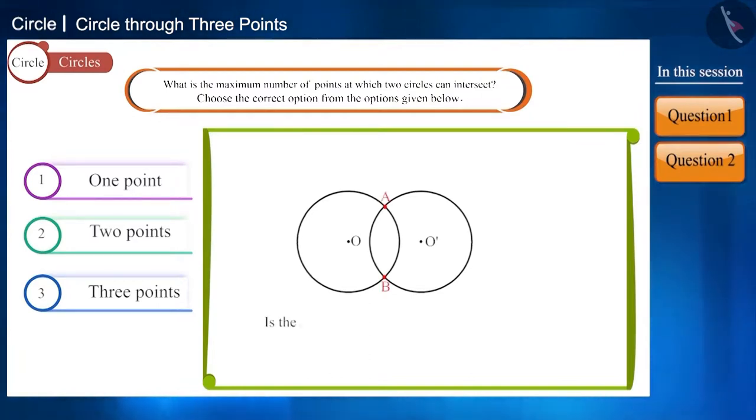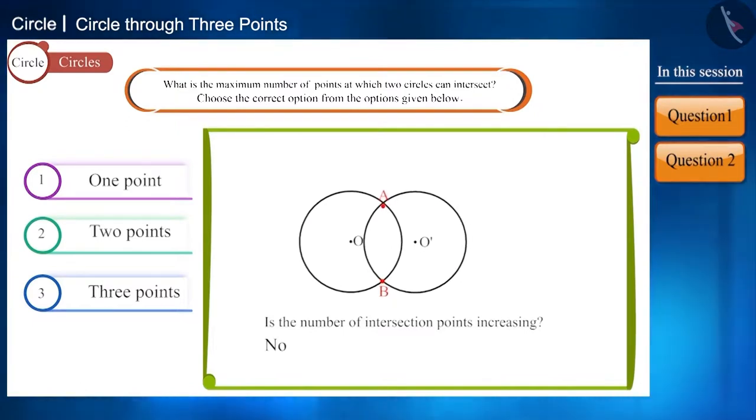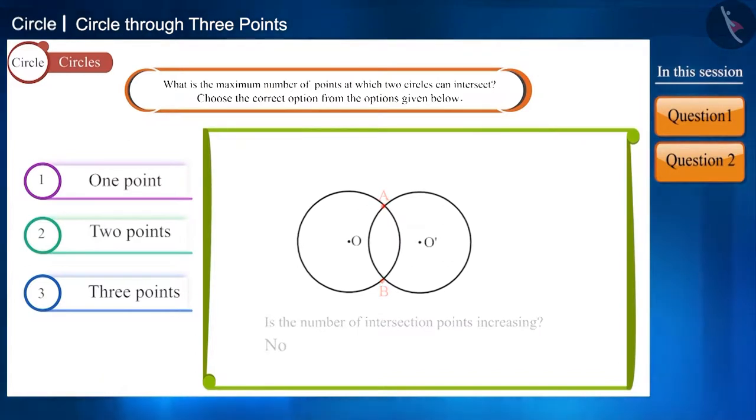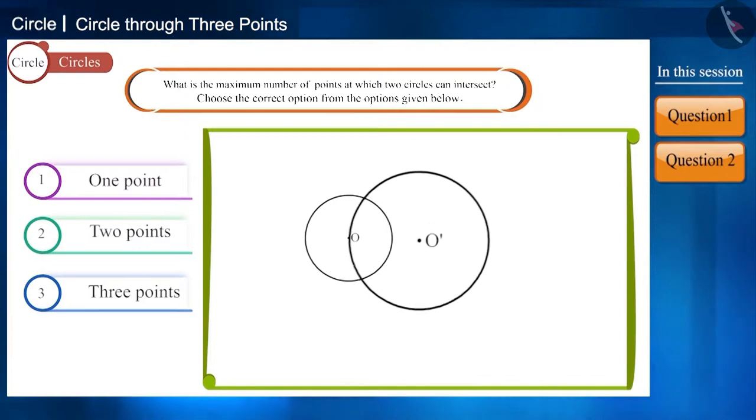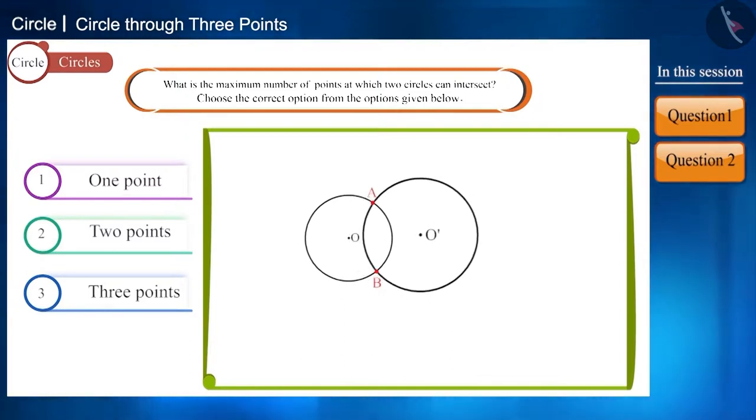Is the number of intersection points increasing? No. Even now, the number of points of intersection is only two. Friends, you can see that whether we keep the size of the circles big or small, they will intersect at only two points.